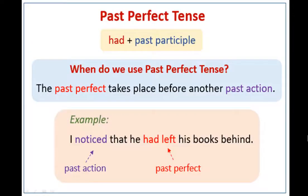Now the next one is the past perfect tense. In this tense, the past perfect takes place before another past action. For example: 'I noticed that he had left his books behind.' The word 'noticed' shows a past action, and 'had left' gives the past perfect — meaning the leaving happened before the noticing. We have to remember it shows a past action indicated through perfect tense.